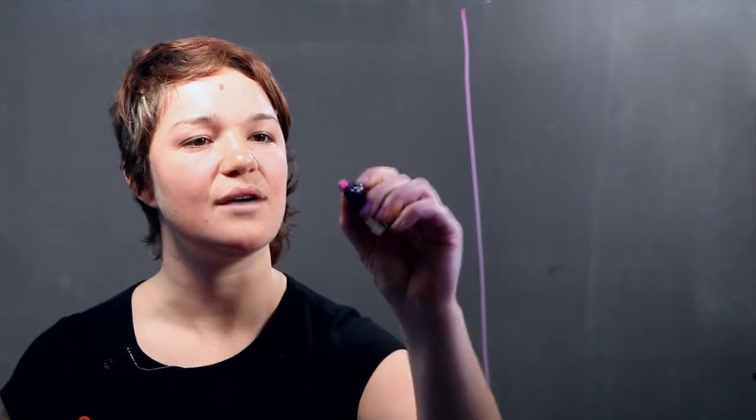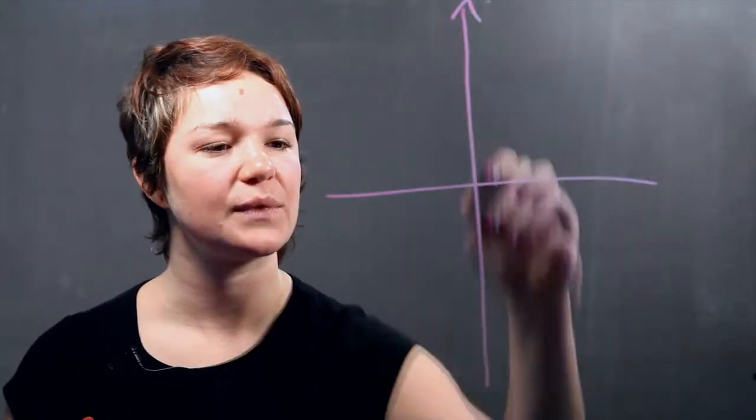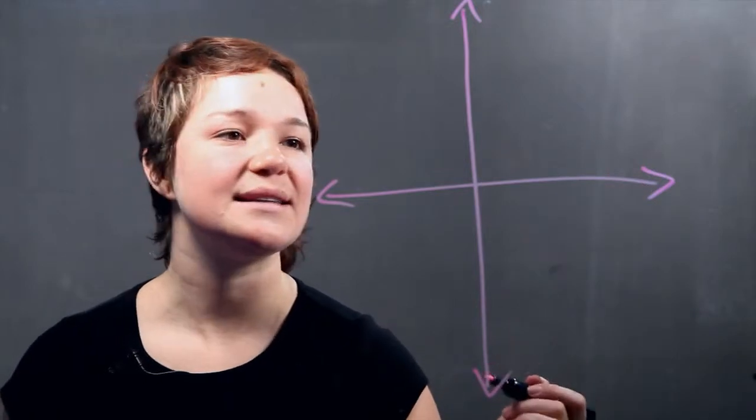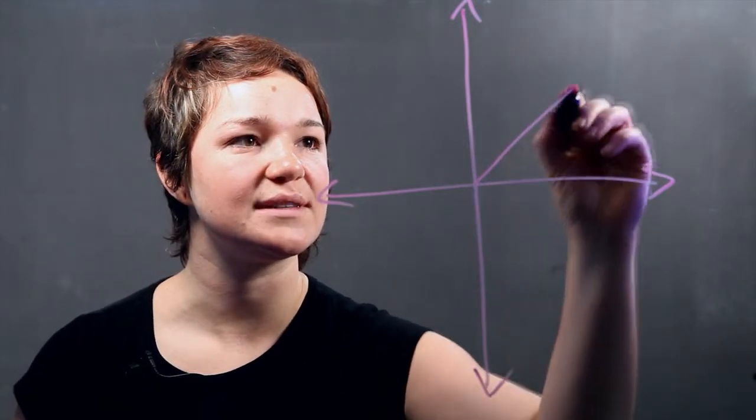So usually to figure out a slope of a line, you're given a plane. This is how a plane is usually drawn. You have your four coordinates and let's say that you're given a line such as this.